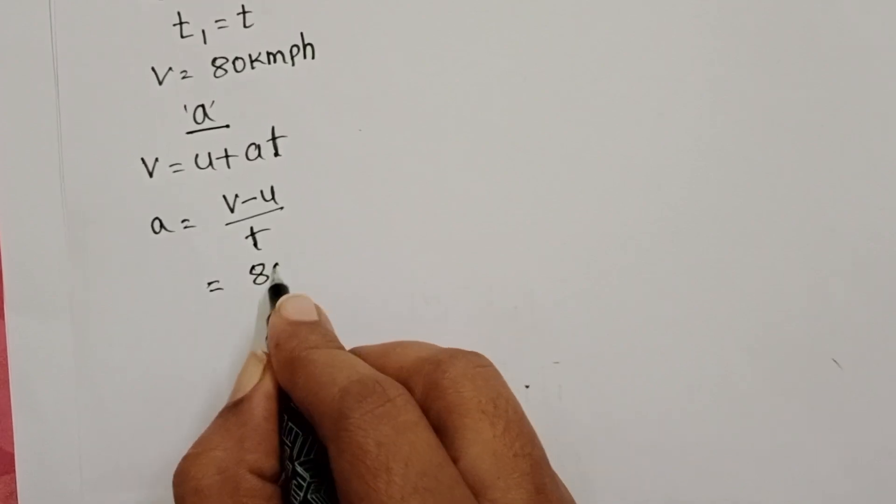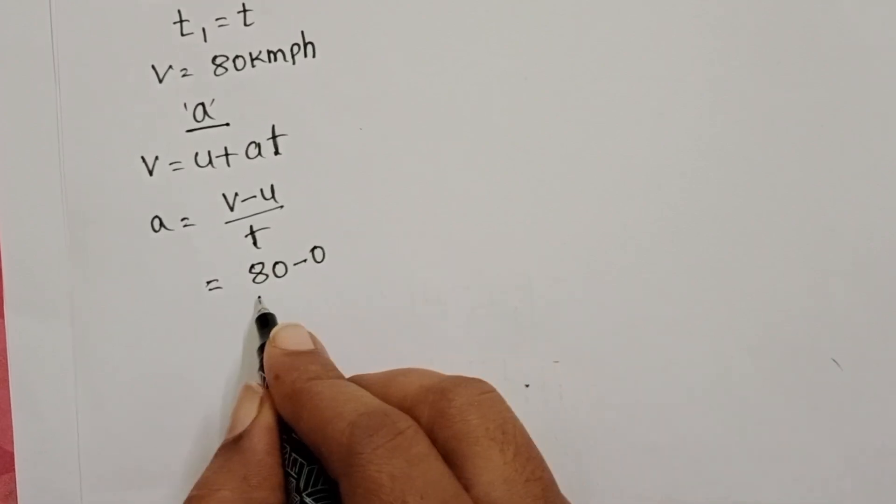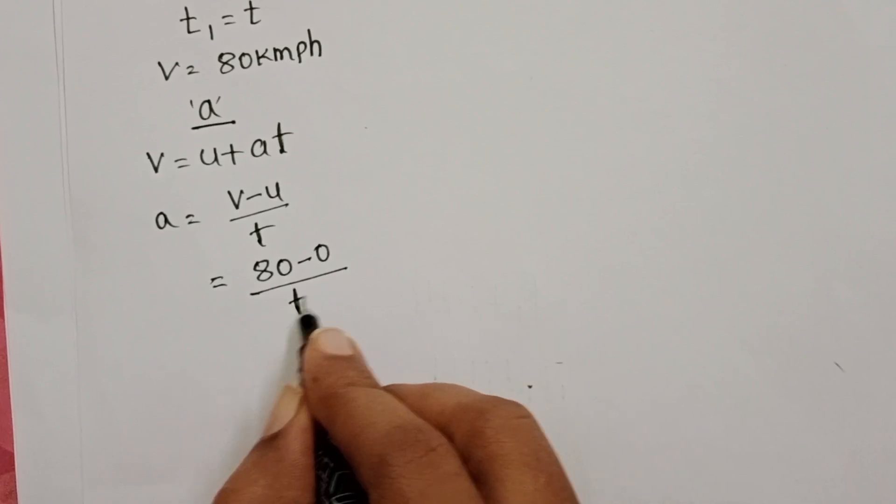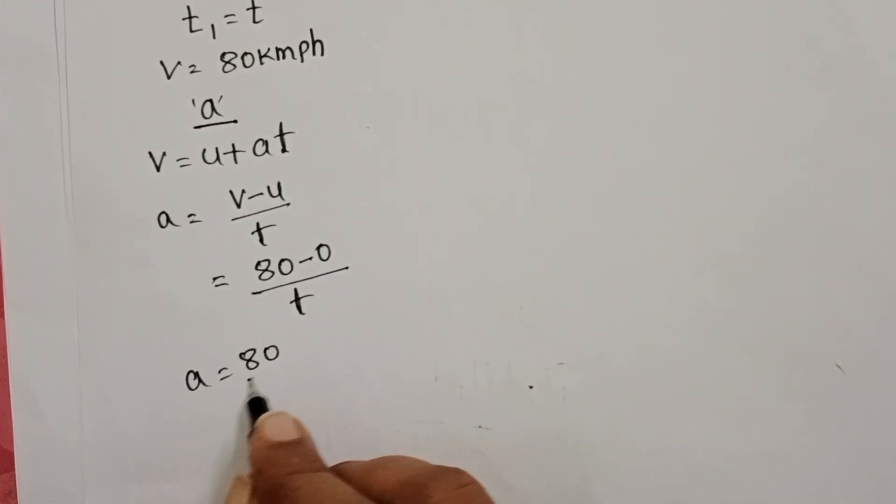Final speed, 80. Initial speed, 0. And given time is T. So, A is equals to 80 by T.